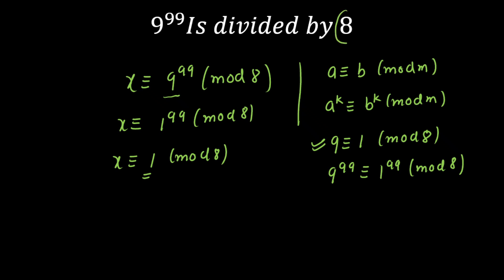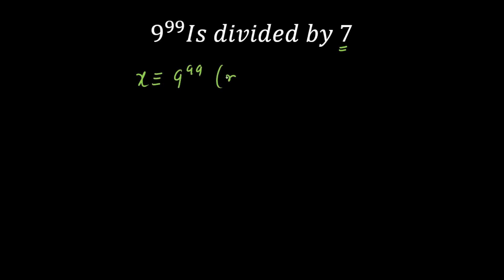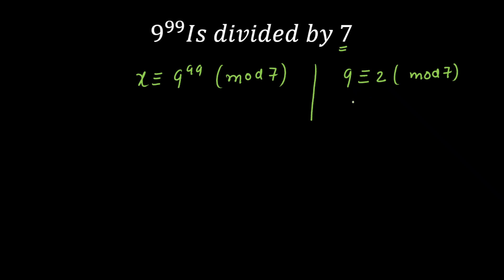Now, what if I change the number 8 by any other number, let's say 7? So what will be the remainder? In the previous question we were dividing by 8. Now in this question we're going to divide by 7, and we'll see what will be the remainder when 9 raised to the power 99 is divided by 7. So let's say x is my remainder, and I can write this as x is congruent to 9 raised to the power 99 modulo 7. This means when you divide 9 raised to the power 99 by 7, the remainder will be x. I've used one theorem, and again I'm going to use the same thing. If you divide 9 by 7, the remainder will be 2, because 9 is congruent to 2 modulo 7.